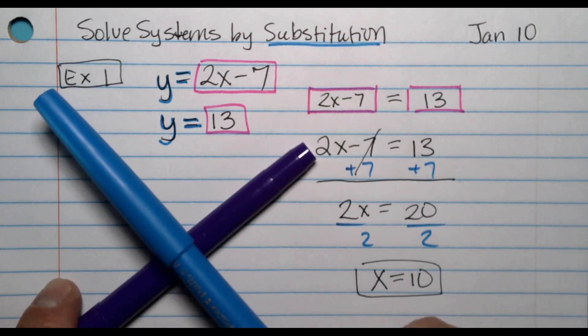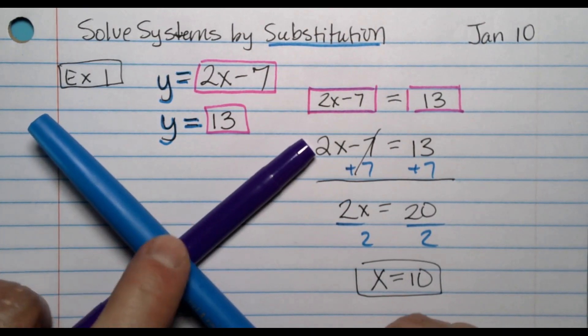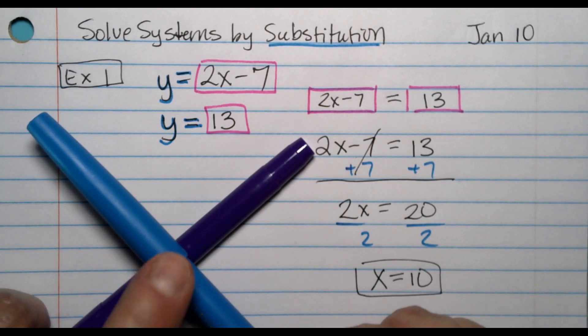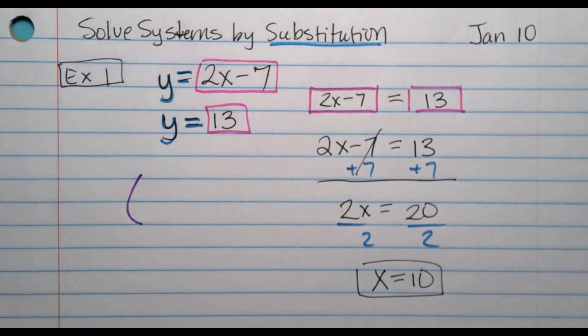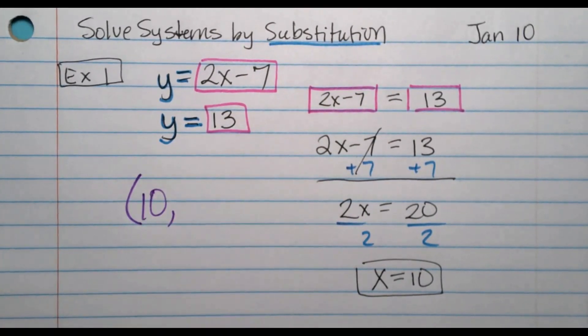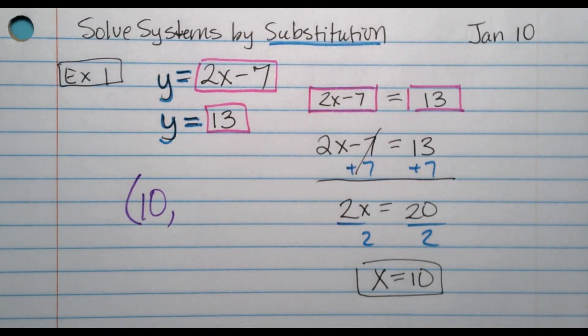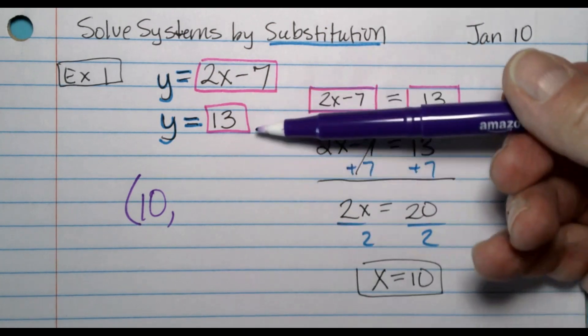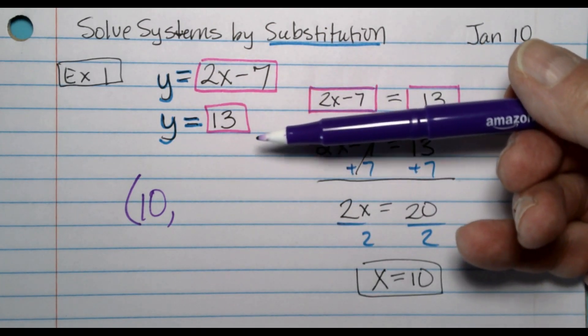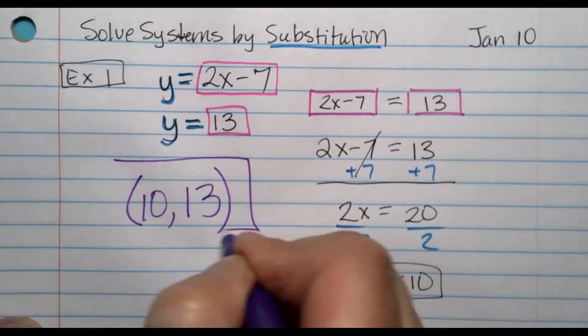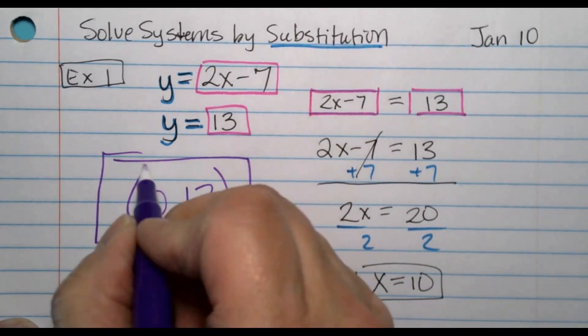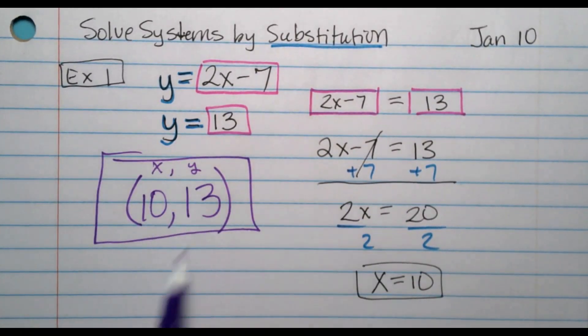And we have half of our answer, although it feels like we have all of our answer. We just found the x. If we graphed this, there'd be an intersection point where they cross. That point has an x value and a y value. I know that the x is 10. And because this is example number one, it's easy to find the y. Obviously the y must be 13 because they straight up told us y was 13. This is your final answer. You write it as an ordered pair: x is 10, y is 13.